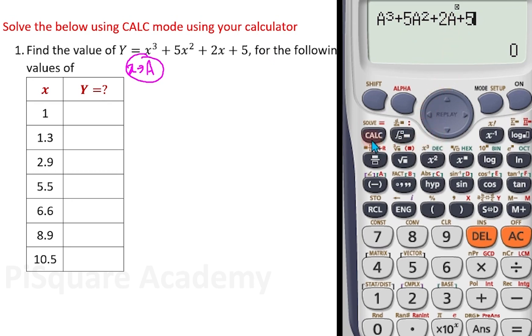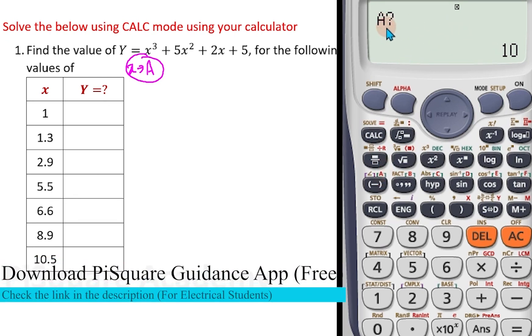Now, see the beauty. Use this button. Instead of clicking this, you press this calc. Calculate. Now it is asking, see? It is asking for what is the value of a? Yes! In place of a, it is x. So what is the value of a? It is 1. Simply press 1 and press equals. So the result is 13. You enter 13 here. Now, again you press this calc. It is asking for a. Enter now 1.3. Press equals. It is giving the value. 18.247.